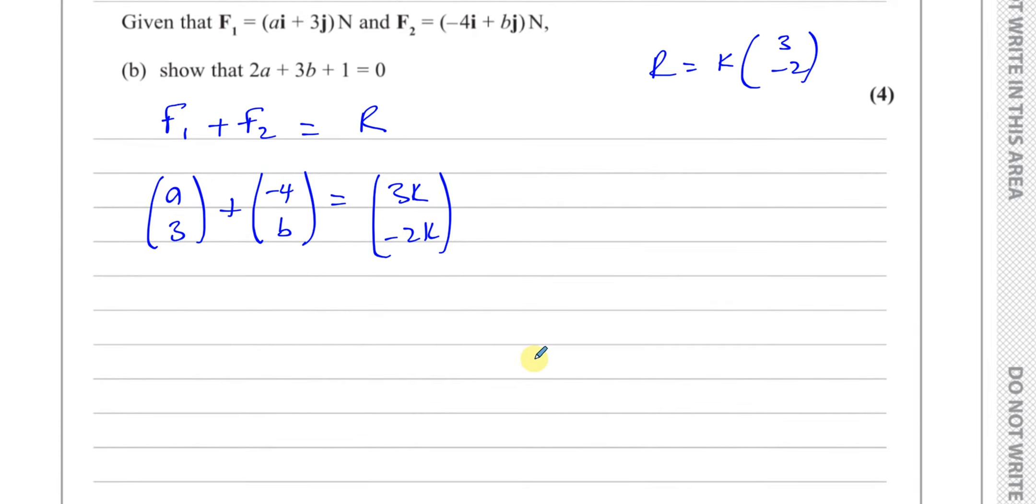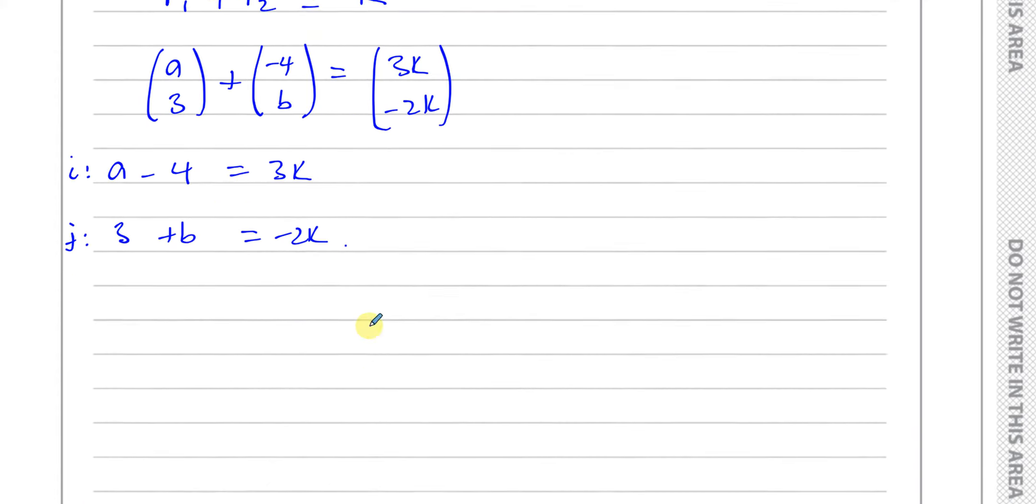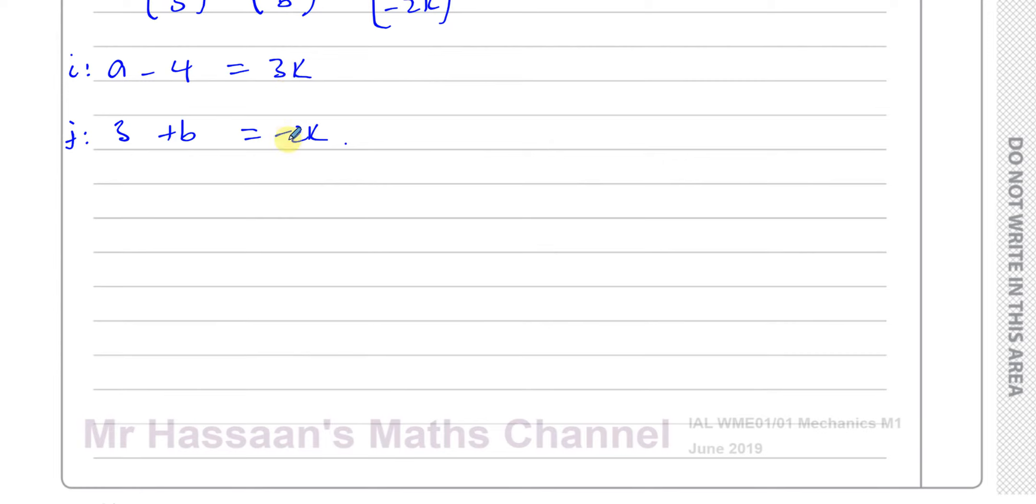What I can do is make a set of equations from this, because I know that the i components, if these two sides are equal to each other, then the i components on this side and the i components on that side must be exactly the same. So I can say that a minus 4 is the same as 3K. That's from the i components. And from the j components, I can say that 3 plus b is exactly the same as minus 2K. Now what we have to show has no K in it, just a and b, so what we should think about here is eliminating the Ks. If I make the Ks have the same coefficient, coefficients that I can eliminate, then I'll be able to deal with it.